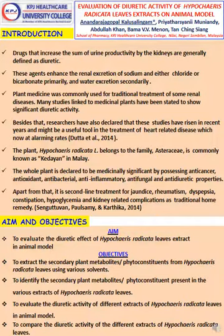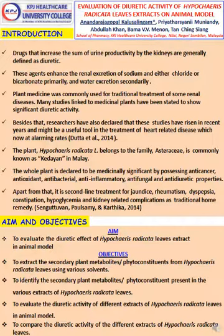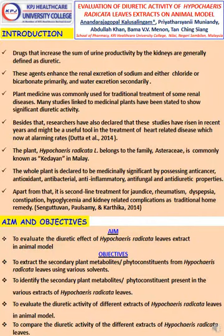So far, there is no evidence for the plant Hypochaeris radicata having diuretic activity. So, in this study, the main aim is to evaluate the diuretic activity of Hypochaeris radicata leaves extract in an animal model. The objective was to extract the secondary plant metabolites from the plant leaves using various solvents, to identify the secondary plant metabolites present in the leaves extract, and to evaluate and compare the diuretic activity among the extracts obtained.